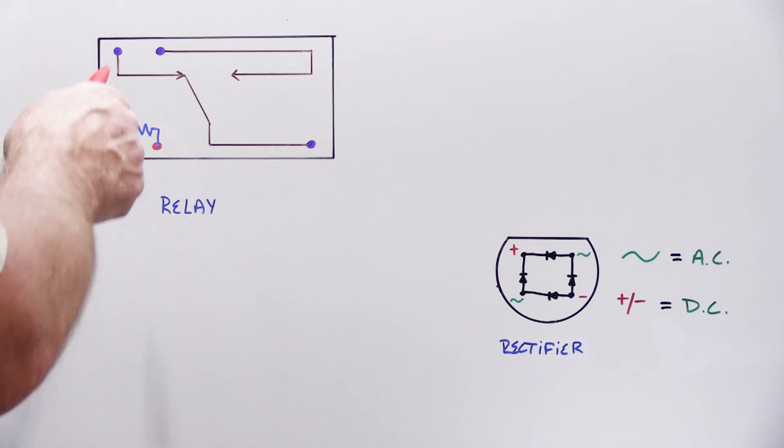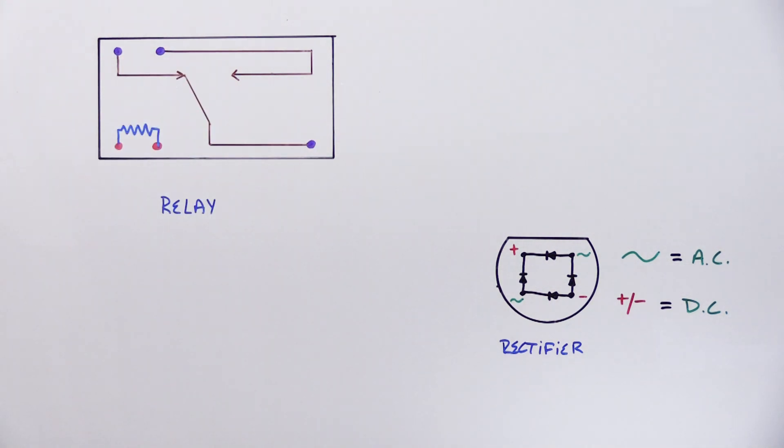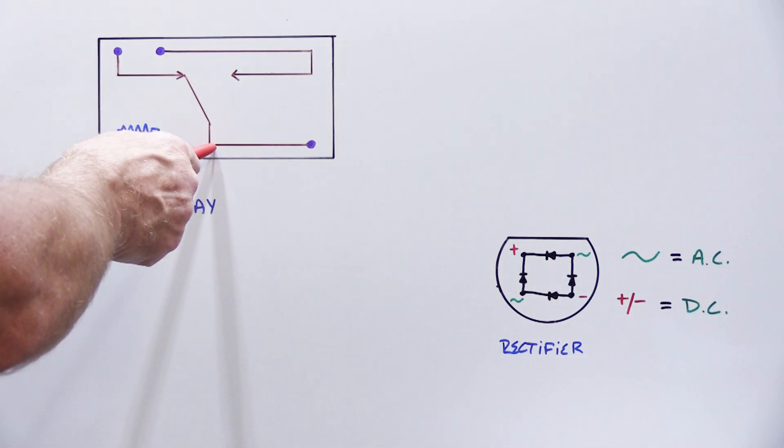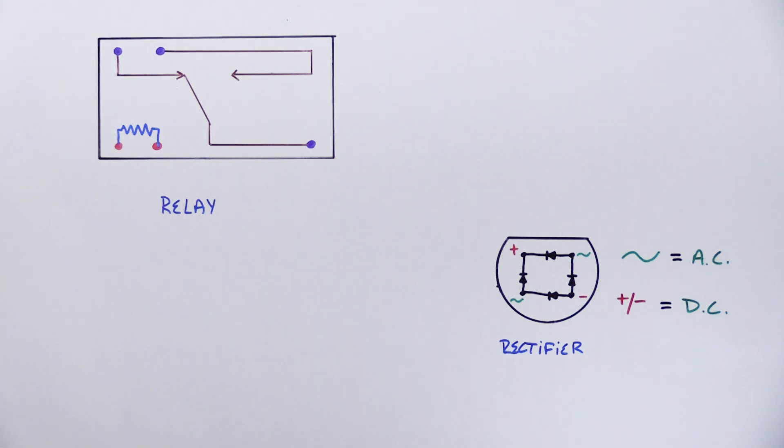The other three terminals are the switching terminals. This one down here on the bottom is the common terminal and that's the one that actually moves when the relay is energized. Then up here we have two other contacts because this type of relay can either be normally open or normally closed. The normal position is the position that the relay is in when the coil is not energized. It's when the relay is at rest, when it's turned off.